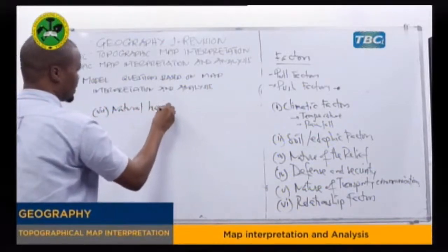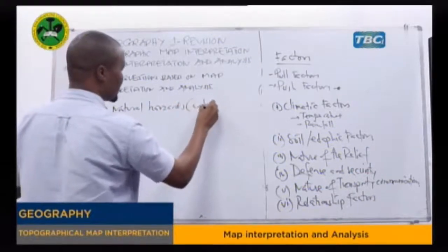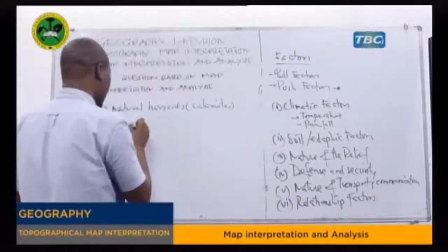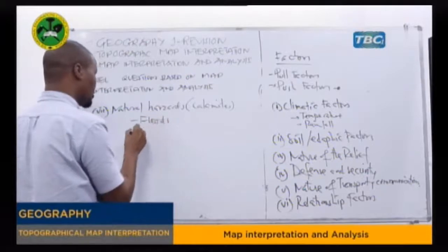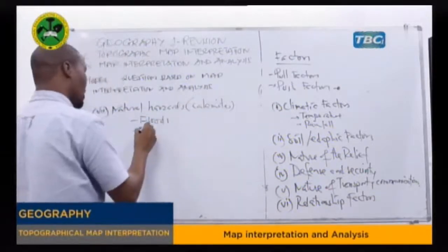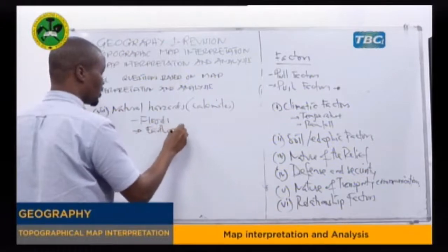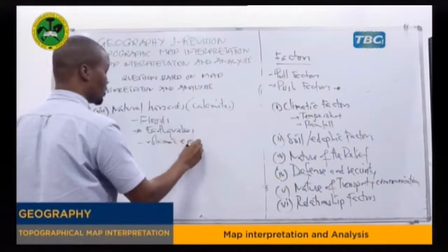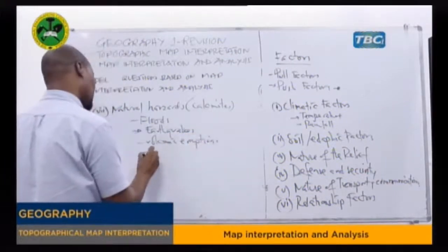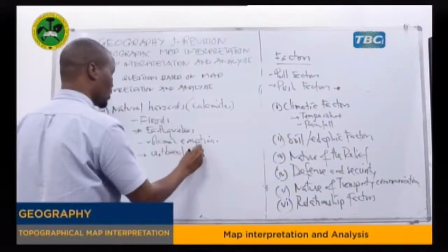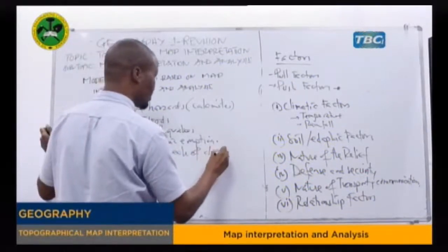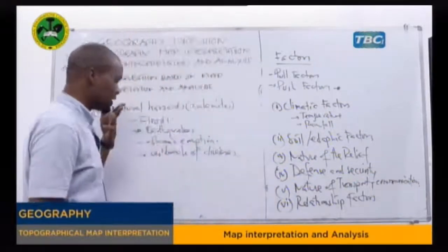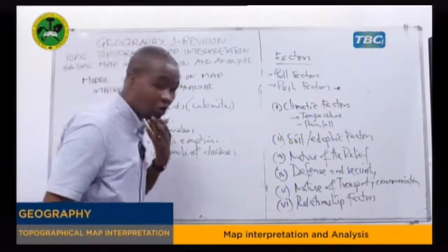Another factor is natural hazards, also called calamities. The presence of floods, earthquakes, volcanic eruptions, or outbreaks of diseases may cause people to shift away from a region. These are among the factors that may cause an area to be rural or urban.